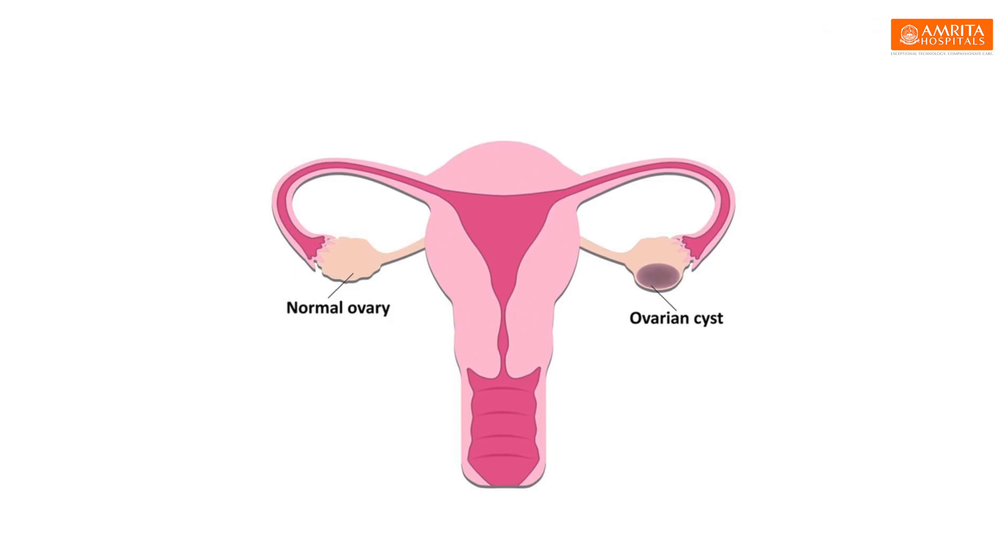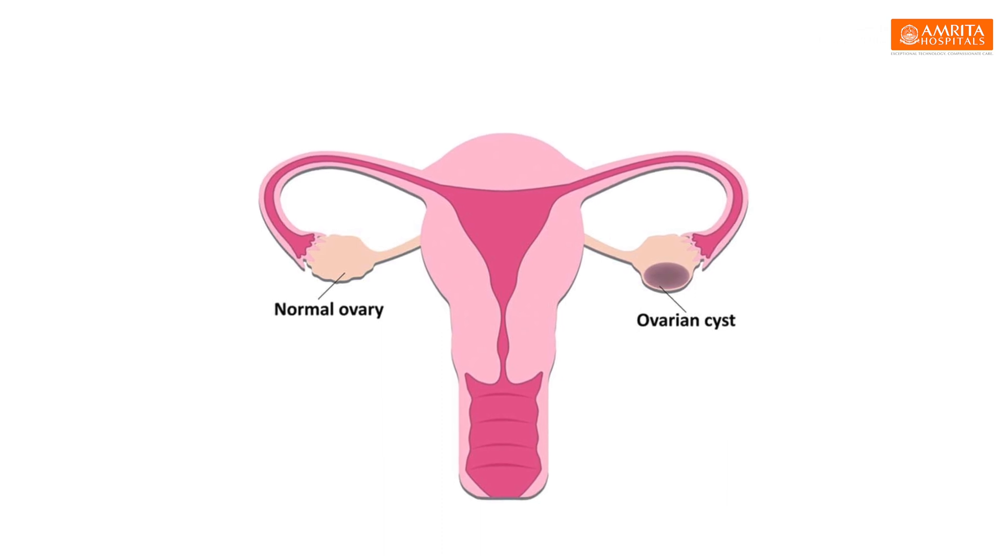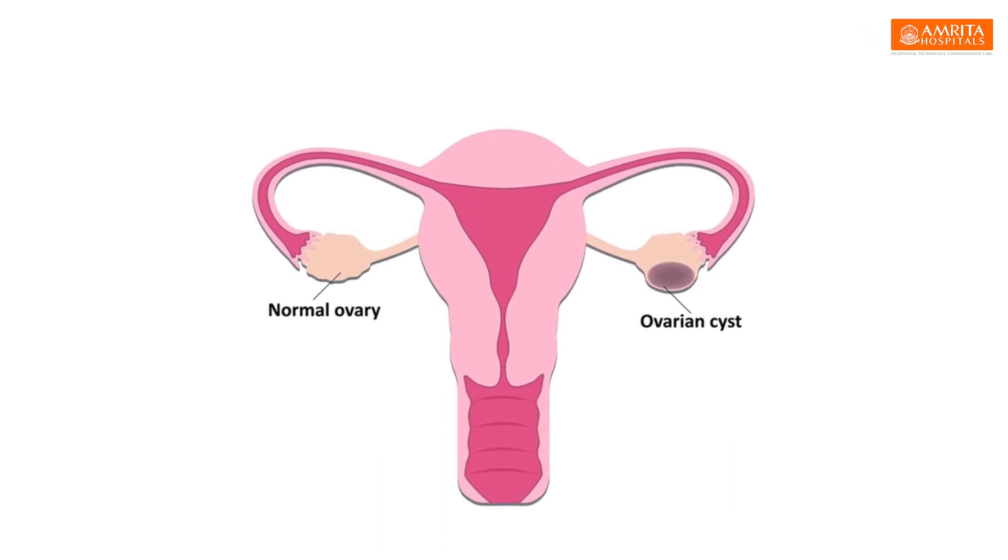If endometriosis occurs in the ovary, that will lead to collection of blood inside the ovary. That is known as an endometriotic cyst or the chocolate cyst.